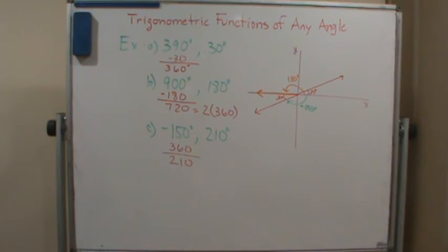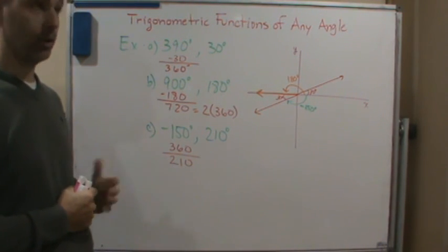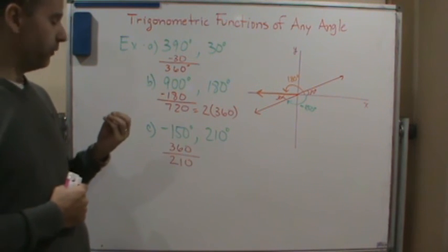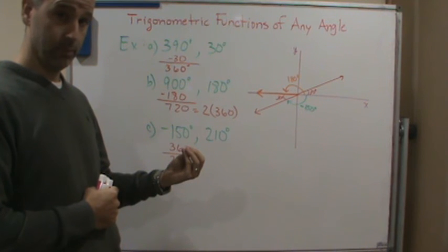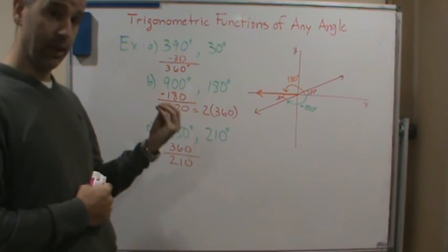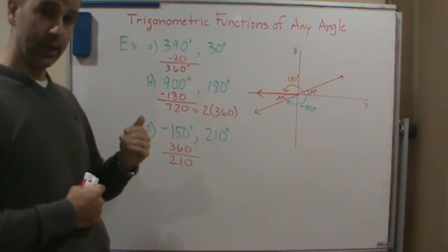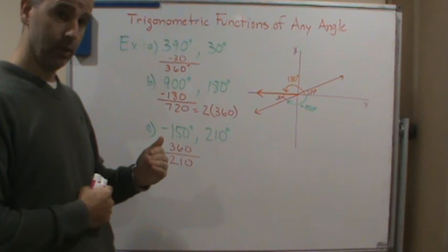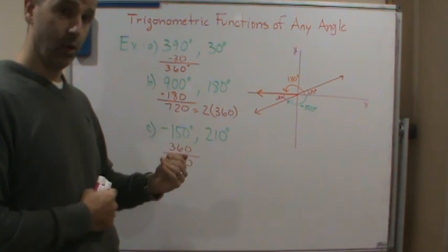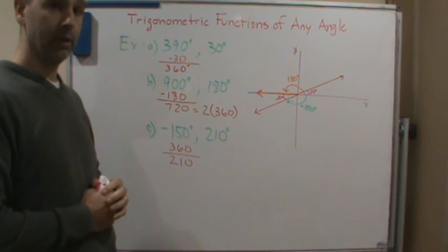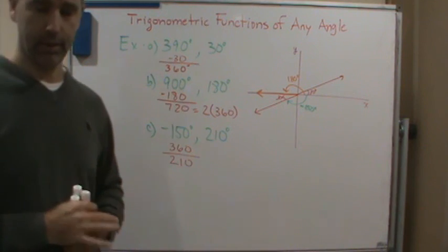Okay, so that's what it means to be coterminal. If one angle... or excuse me, if you have to add or subtract a multiple of 360 to get to the angle, then those angles are coterminal. So again, to be coterminal angles, you have to show that to go from one angle to the next angle, you have to add or subtract a multiple of 360. That's it. See you later.